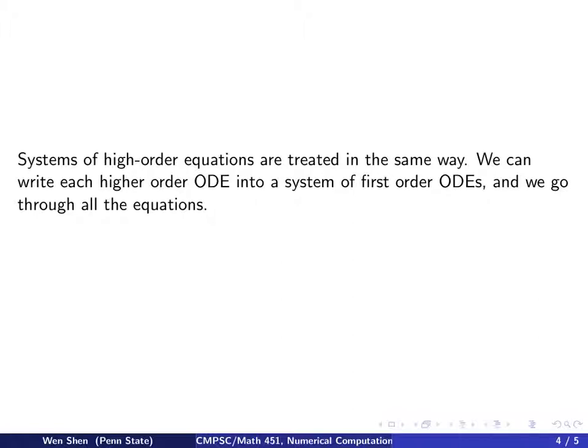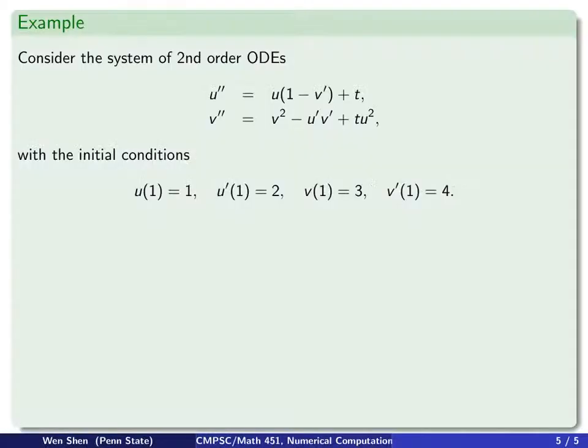We'll take an example now. I have a system of second-order ODEs, two equations, each is second-order. u and v are my unknowns. u double prime equals to something, and v double prime equals to something. On the right-hand side, I have only lower-order derivatives, which means only first-order derivatives. With initial conditions given at t equals to 1 for u, u prime, v, and v prime.